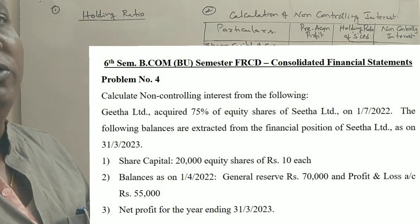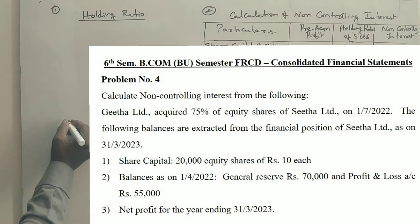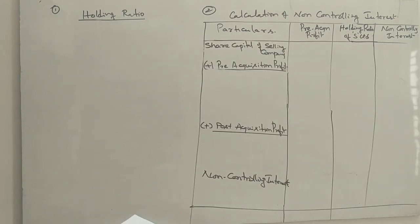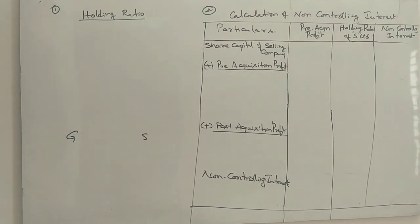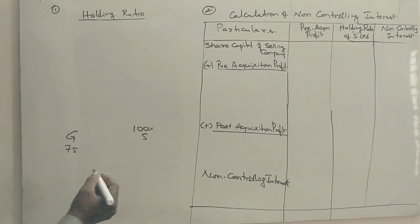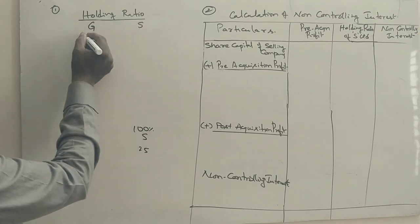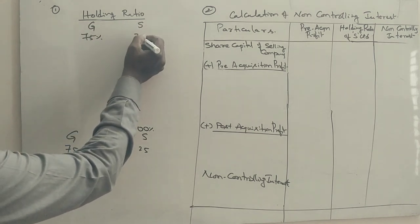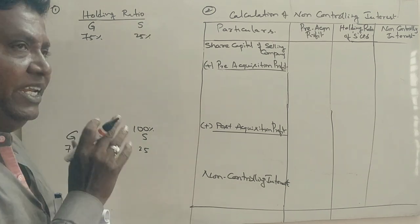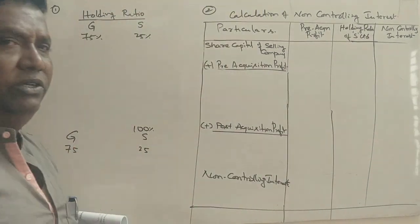See, this is the first question. Let me explain. Sita company — Geeta and Sita — Sita has 100% share holdings total. Geeta acquired 75%, so Sita's remaining is 25%. So the holding ratio: Geeta holds 75%, non-controlling interest holds 25%. Now, what we calculate is non-controlling interest of Sita company.